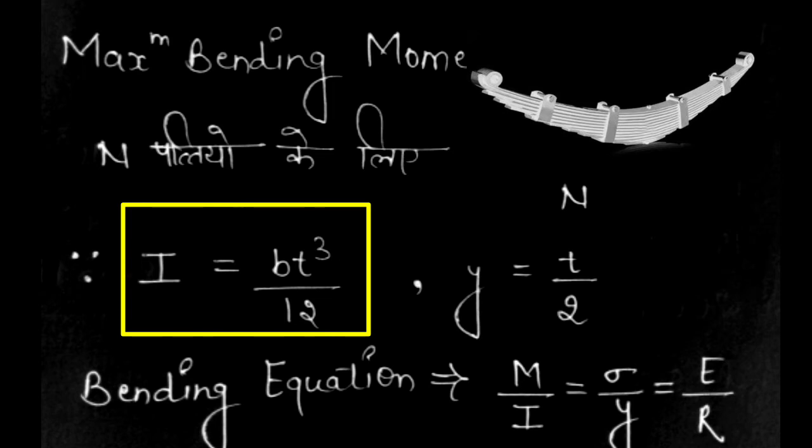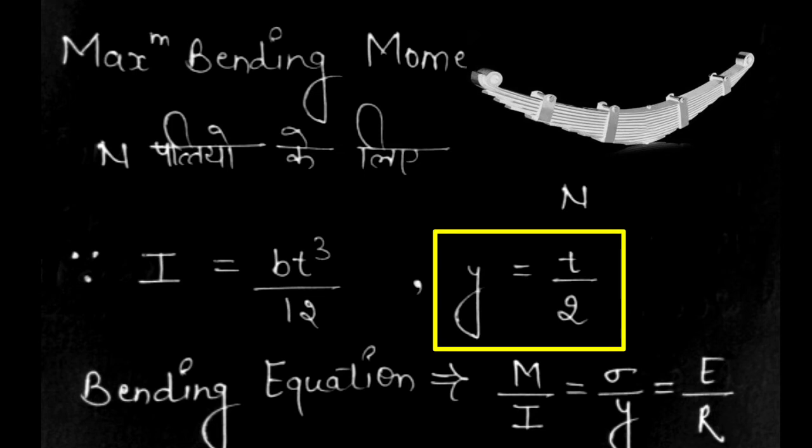I will be bt cubed by 12. We will talk about Y—we know Y is the distance from the neutral axis.